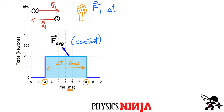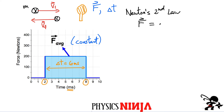Imagine a graph where this is the force exerted by the tennis racket on the ball. In the simplest case, the force is a constant value. Plotting force versus time, the force was acting from two to eight milliseconds — that's delta T of six milliseconds. Now going back to Newton's second law: the sum of forces equals mass times acceleration, where acceleration is the change of velocity (V final minus V initial) divided by delta T.